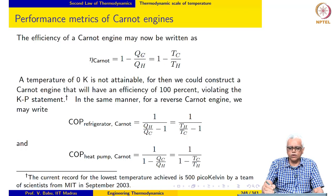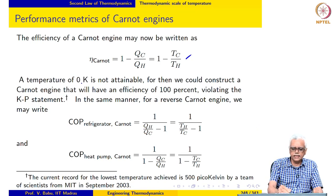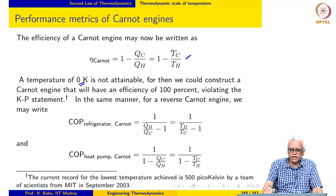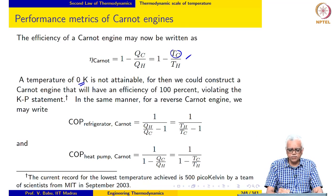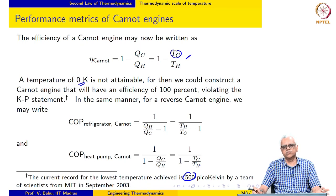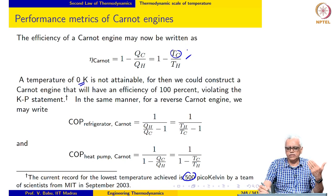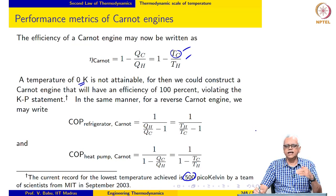What emerges from the analysis is both a new temperature scale and a connection between the Kelvin scale and existing scales: zero Kelvin corresponds to minus 273.15°C. The efficiency of the Carnot engine may now be written as 1 minus TC over TH. A temperature of zero Kelvin is not attainable because if it were, the Carnot engine efficiency would be 100%, violating the Kelvin–Planck statement.